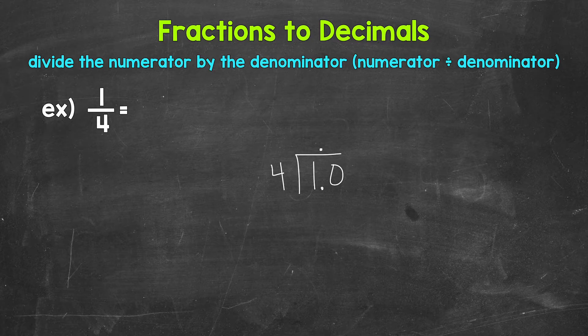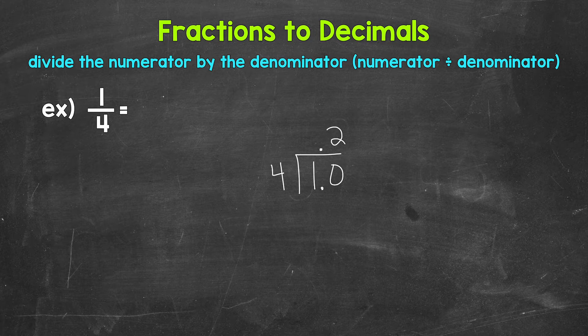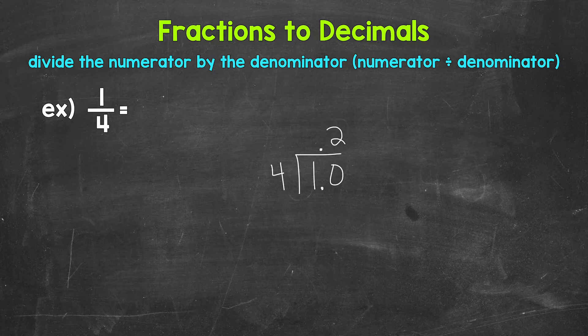Now we can think of this as 10 divided by 4. So how many whole groups of 4 in 10? Well, 2, that gets us to 8. So we need a 2 above the 0 here. And make sure that 2 is above the 0. Since we used that 0 and thought of this as 10 divided by 4, that will line us up correctly. Now we multiply 2 times 4 is 8. Subtract 10 minus 8 is 2.